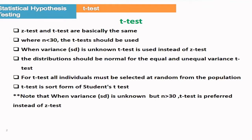We already learned Z-Test. T-Test and Z-Test are basically the same, but the difference is that when the sample size is less than 30, we have to use the T-Test. When the sample size is more than 30 we can use Z-Test. Also, for Z-Test the variance of the population should be known, but if it is unknown then you can use the T-Test instead of Z-Test.